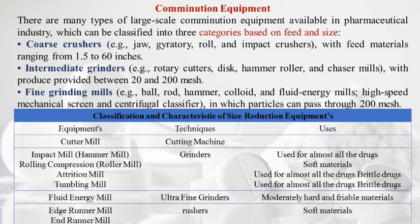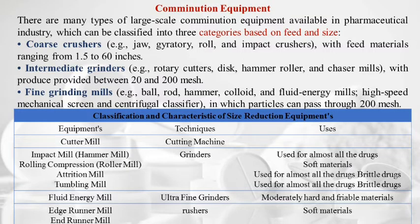Characteristics of size reduction equipment: cutter mills use cutting action; impact mills (hammer mill) are used for almost all kinds of drugs; rolling compression roller mills are for soft materials; attrition mills and tumbling mills for almost all and brittle drugs; fluid energy mills are ultra-fine grinders for moderately hard and friable materials; edge runner mill and end runner mill are crushers used mainly for soft materials.